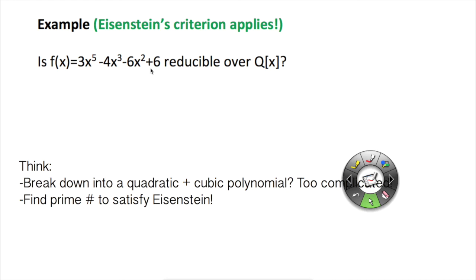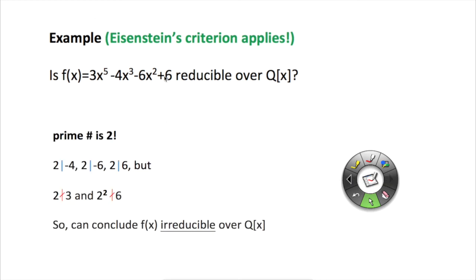is there a prime number that divides 6, divides negative 6, and divides negative 4? Let's try 2. So 2 divides 6, 2 divides negative 6, and 2 divides negative 4. But 2 does not divide 3, and 2 squared does not divide 6. And that's when we can conclude f(x) is in fact irreducible over Q[x].